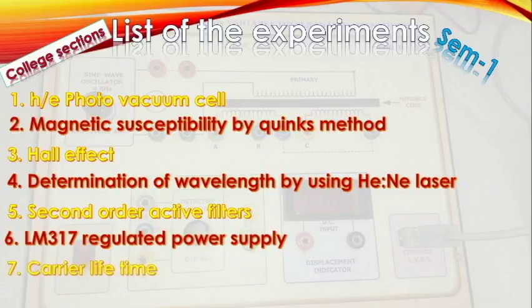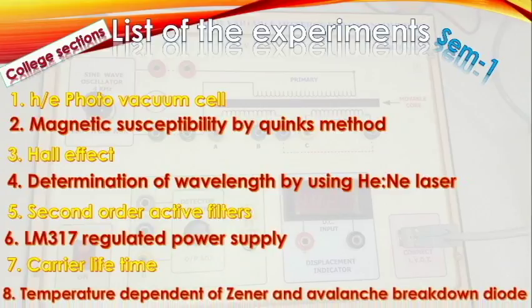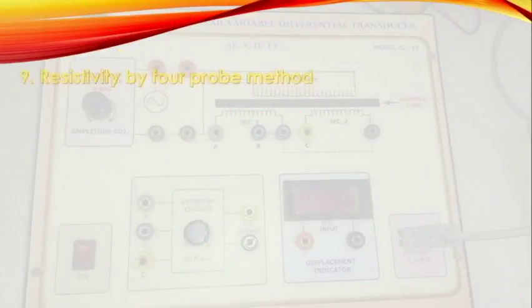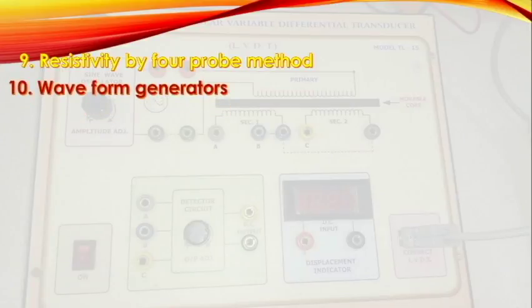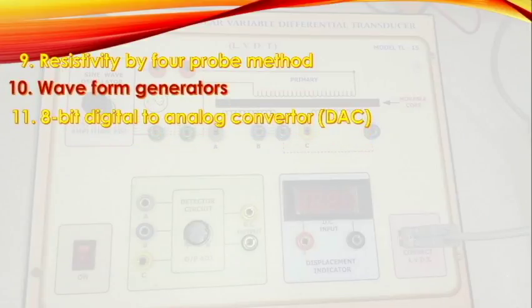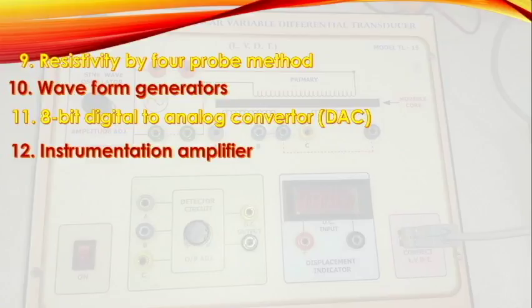The sixth one is LM317 regulated power supply, seventh one is carrier lifetime, eighth one is temperature dependence of a Zener and avalanche breakdown diode, ninth one is resistivity by four probe method, tenth one is waveform generators, eleventh one is 8-bit digital to analog converter (DAC), and twelfth one is instrumentation amplifier.